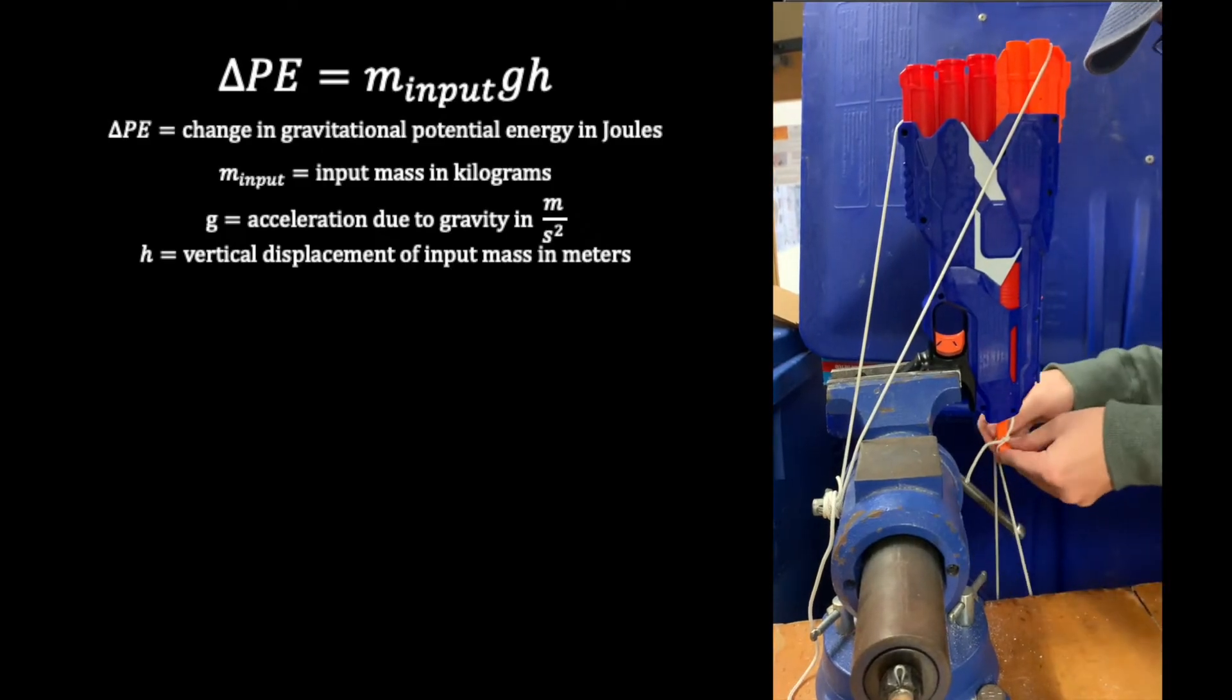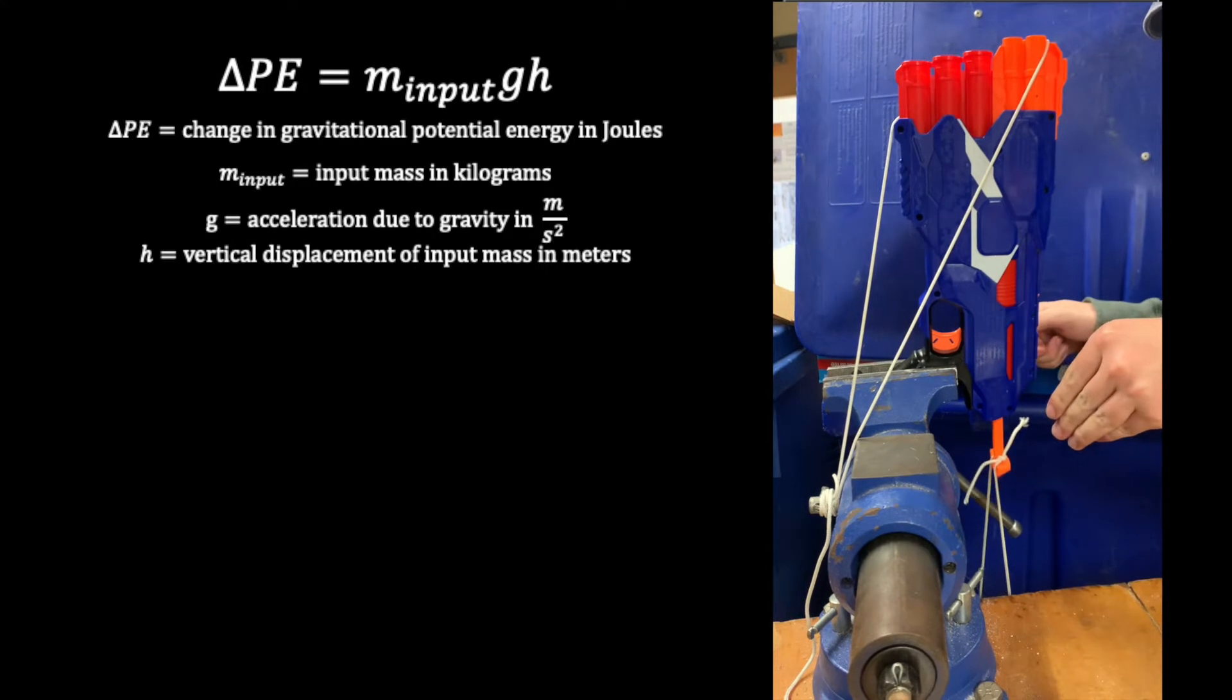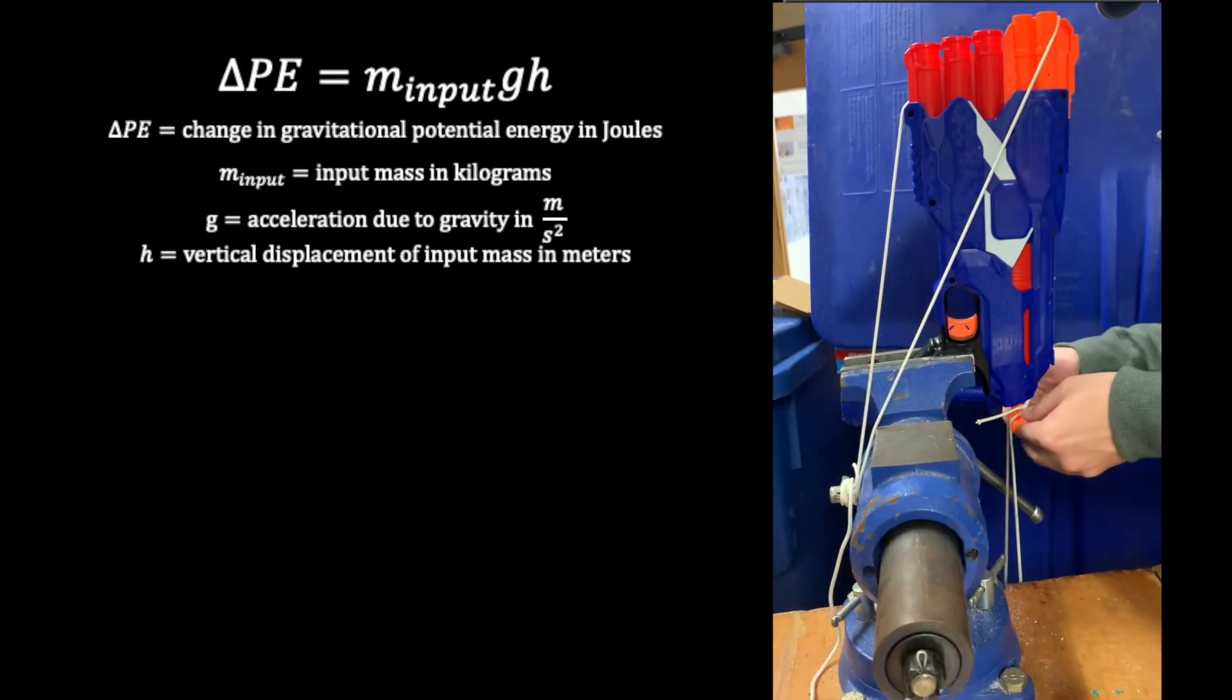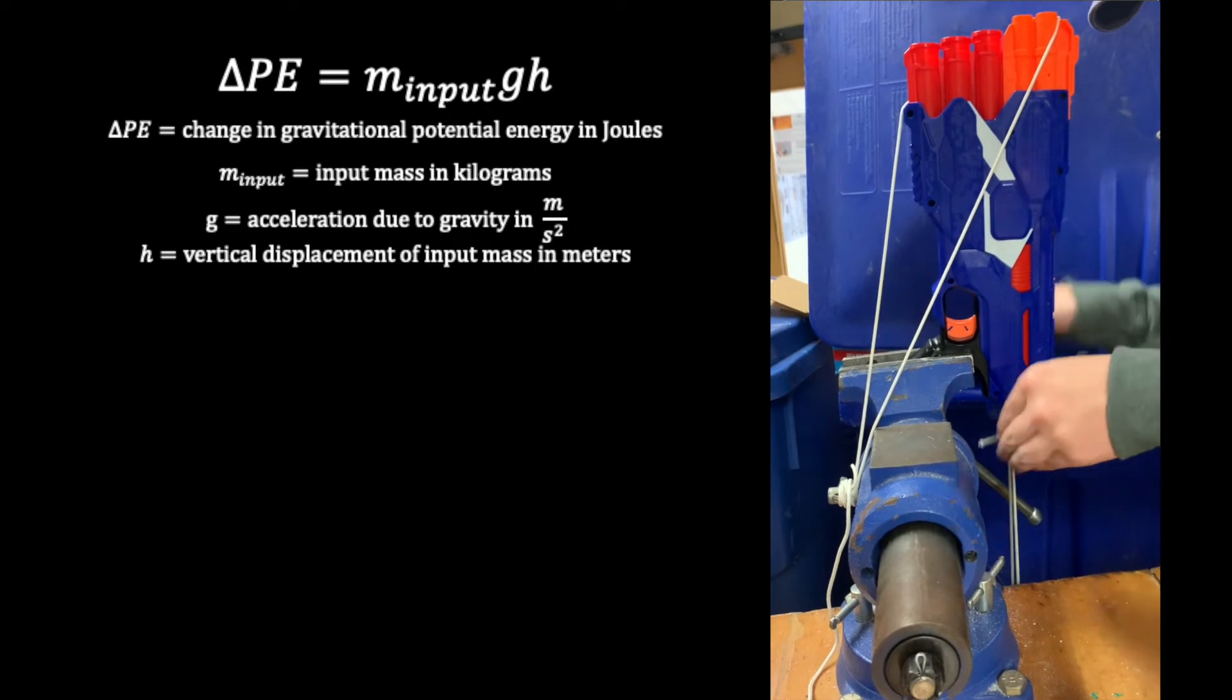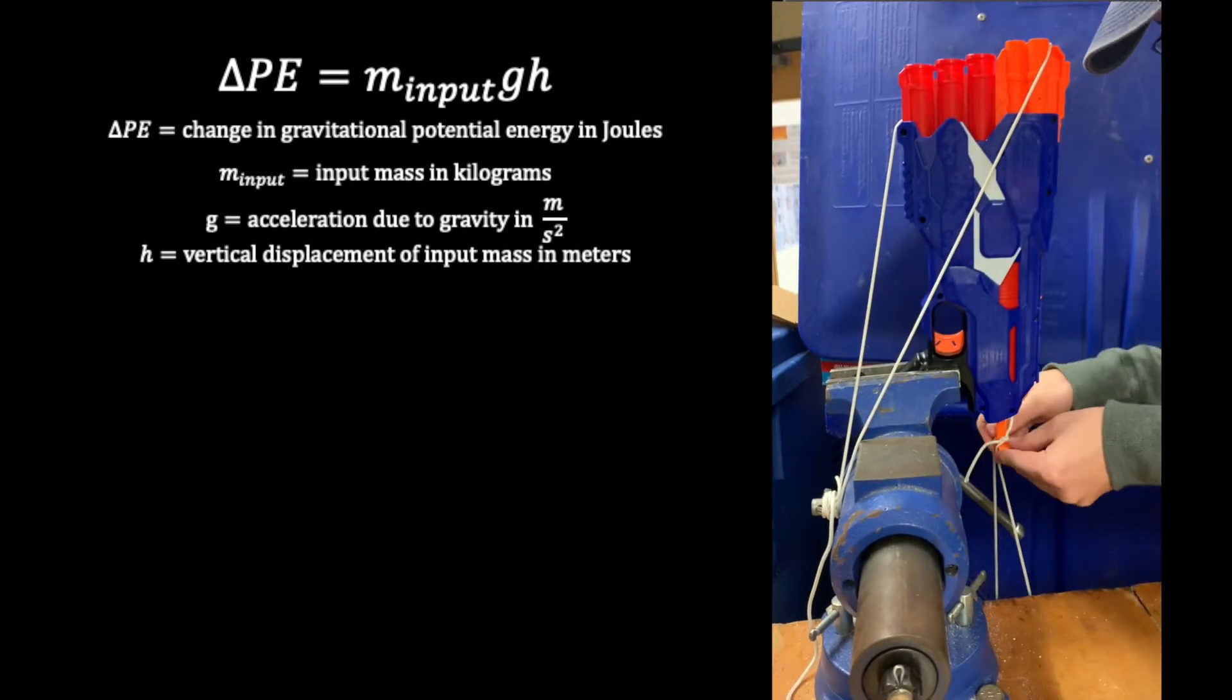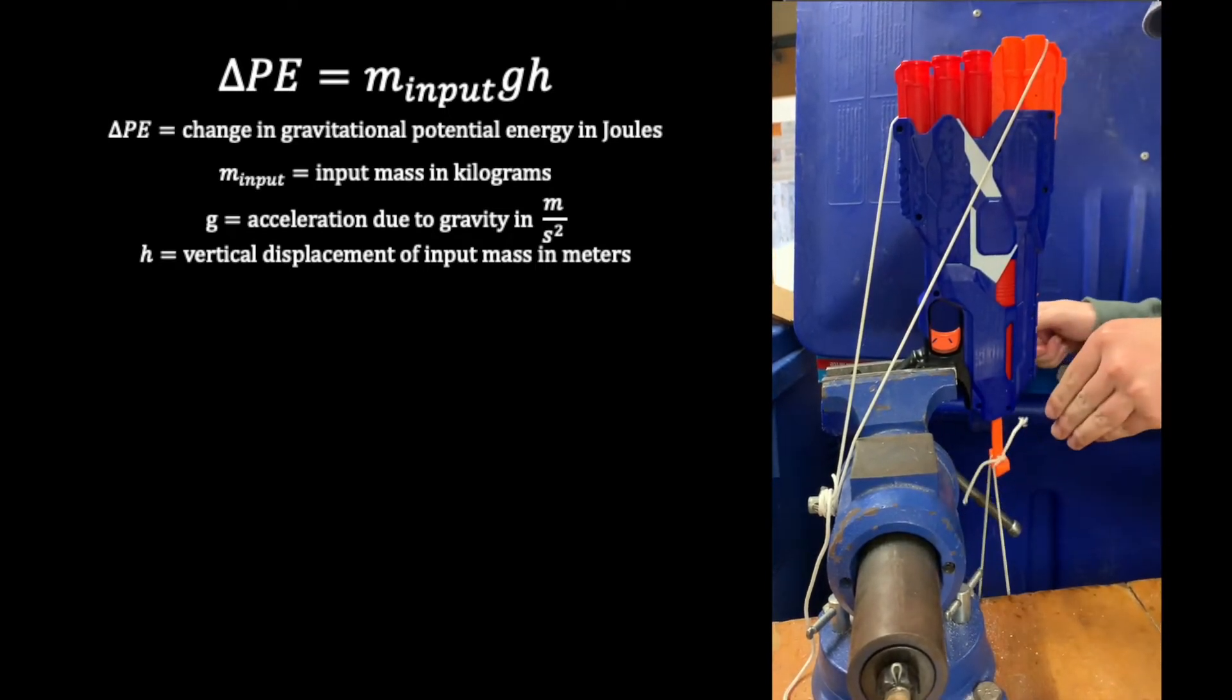In the lab, the input work required to cock the blaster was determined by hanging masses consisting of a cup with ball bearings, each weighing one gram, from the cocking piston and measuring the vertical displacement of the cocking piston to calculate the change in potential energy of the ball bearing mass using the gravitational potential energy equation.